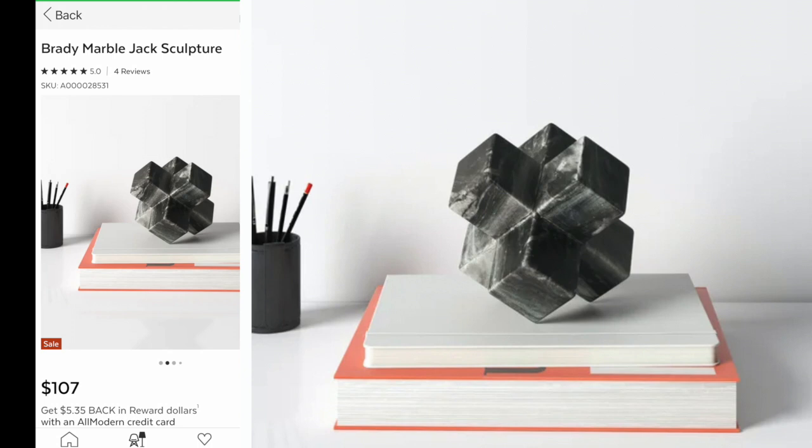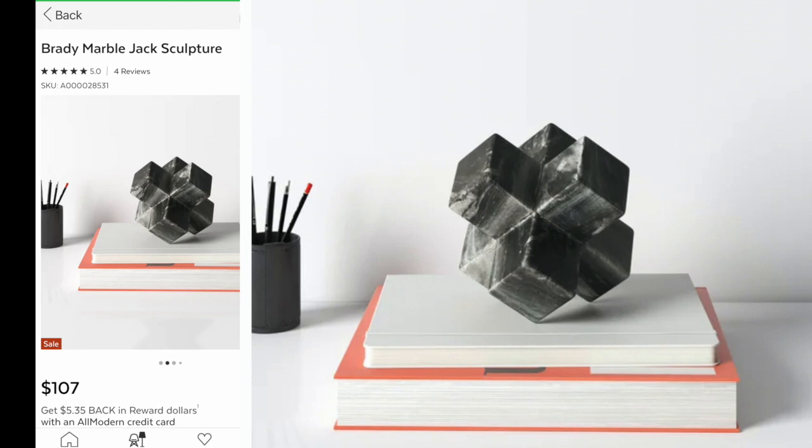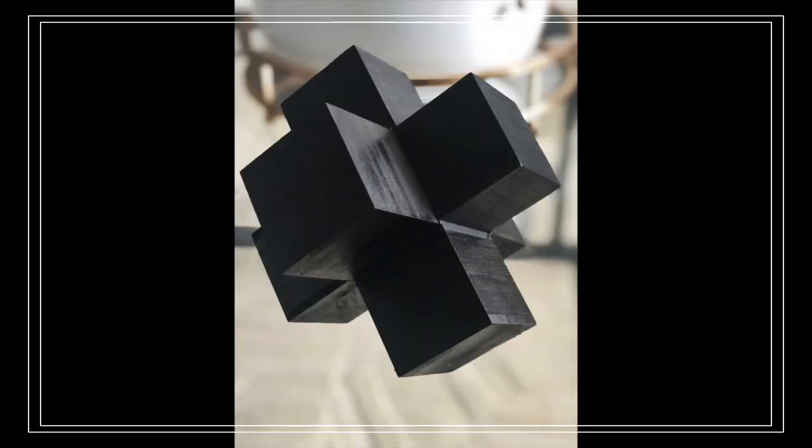I want to use this on this particular piece that I did in my last Dollar Tree project. If you look, I'll put the link at the top in case you want to see how to make it. But this is the marble jack sculpture that I saw on All Modern and it was $107 and I recreated it for $6 using Dollar Tree supplies. And this is what it turned out to look like.